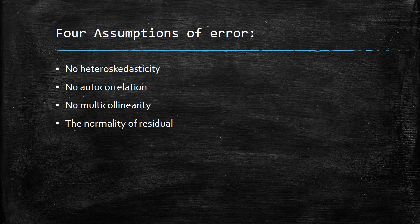In the classic linear regression model, we have four assumptions of errors. There is no heteroskedasticity, no autocorrelation, no multicollinearity, and the normality of residuals.